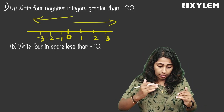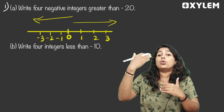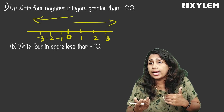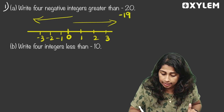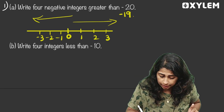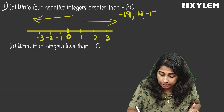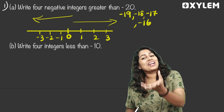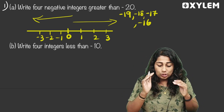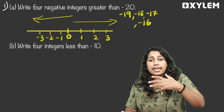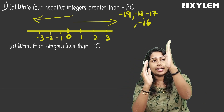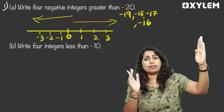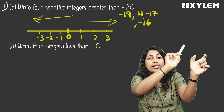So integers greater than negative 20 would be numbers like negative 19, negative 17, negative 16 — all numbers larger than negative 20. You are choosing numbers from this range. Negative 1, negative 2, negative 3, negative 4, negative 5 — all of these are to the right of negative 20.